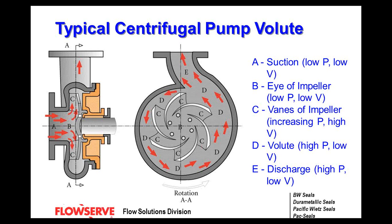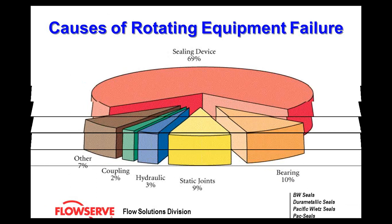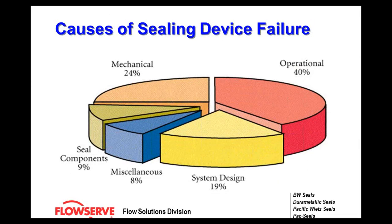Here are some causes of rotating equipment failure. The sealing device makes up sixty-nine percent of the failures. Some causes of sealing device failures are operational, mechanical seal components, and system design, and we're going to talk a little bit more about those.